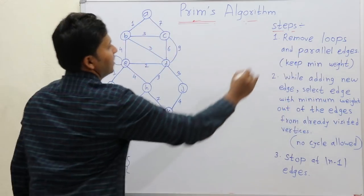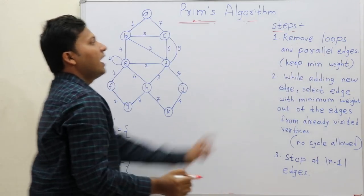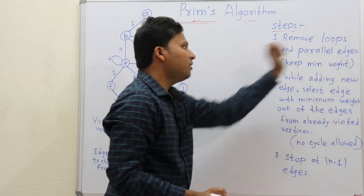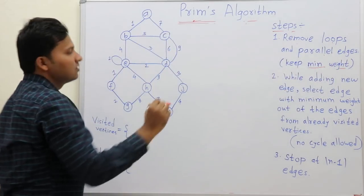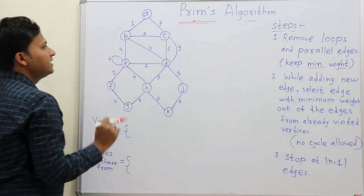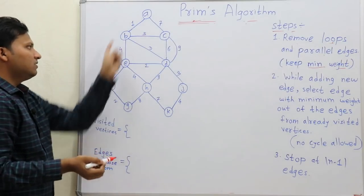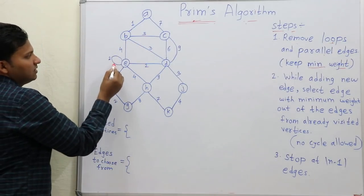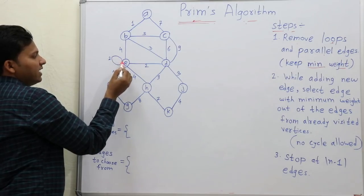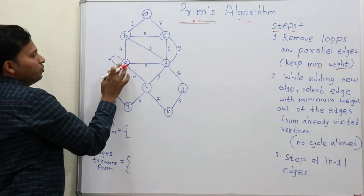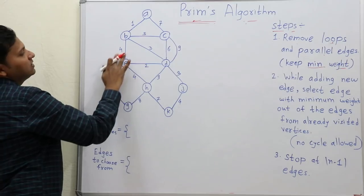Let's start. The first step is remove loops and parallel edges. While removing loops and parallel edges, you have to keep the minimum weight edges. So where is the loop in this graph? This edge starts at E and ends at E, so this is the loop. We will directly remove this loop.